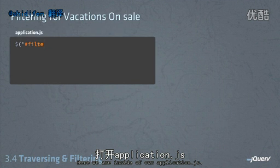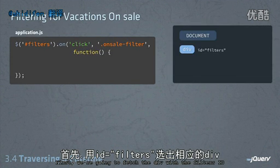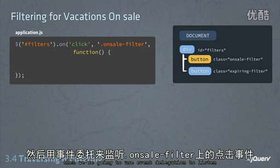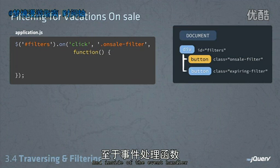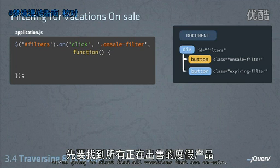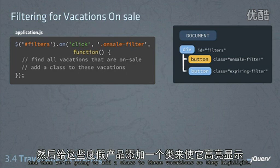Inside our application.js, first we're going to fetch the div with the filters ID, then we're going to use event delegation to listen for click events for the on-sale filter class. Inside the event handler, we're going to first find all vacations that are on sale, and then we're going to add a class to these vacations so they highlight.